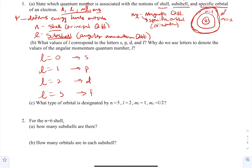The reason we use letters is because it makes it easier when writing out orbitals. For example, if we had a 2p orbital, identifying it with just numbers — writing '2' and then '1' — doesn't really make sense; it just looks like the number 21. So we use letters to designate which orbital we're talking about.